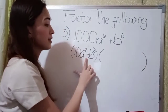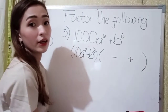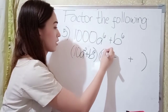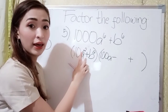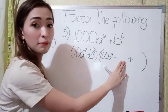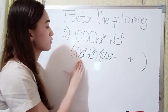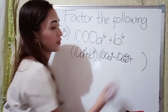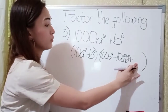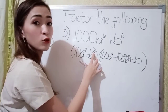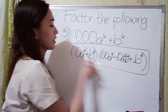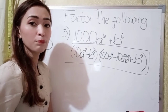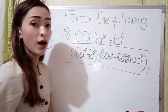For our right-hand side, since this is plus, we have minus sign here and then plus sign here. For our first term, square the first term — 10 times 10 is 100. We have a here; the exponent, multiply it by 2 — 2 times 2 is 4. For our middle term, multiply the first and last term: 10a squared times b squared, that is 10a squared b squared. For our last term, square the last term — we have b, and 2 times 2 is 4. Our final answer in number 5 is 10a squared plus b squared, times 100a to the 4th power minus 10a squared b squared plus b to the 4th power.